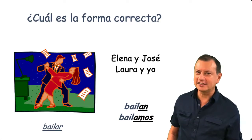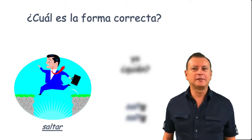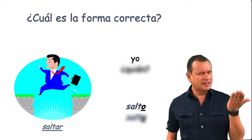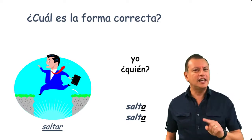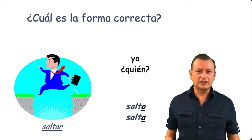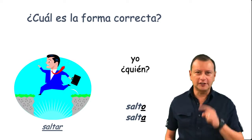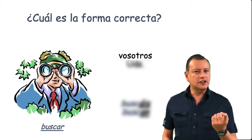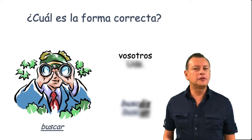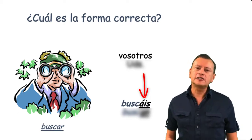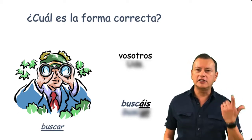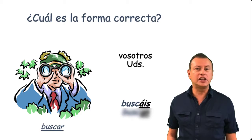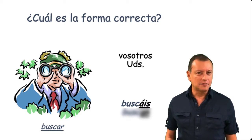Let's continue practicing. Saltar, which is to jump. Yo — salto. ¿Quién? — salta. ¿Quién? is a very neutral question referring to one person only. More verbs: buscar. Vosotros buscáis — notice the accent. The vosotros form is only used in Spain but you should get used to hearing it. Ustedes — the plural used in Latin America, abbreviated UDS — ustedes buscan.